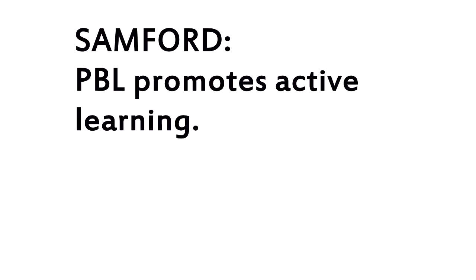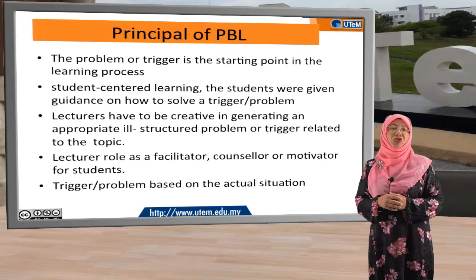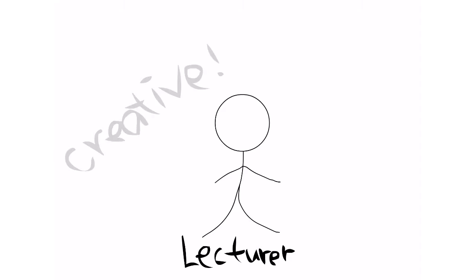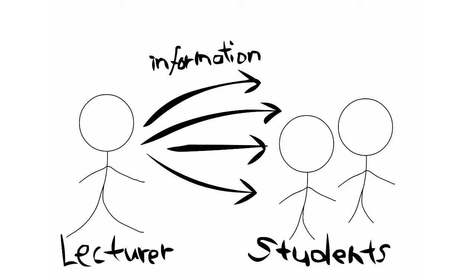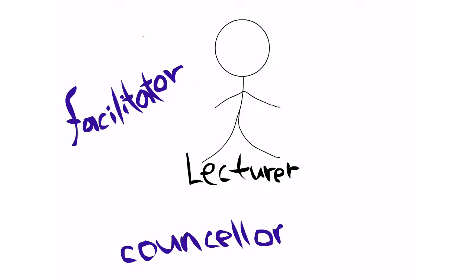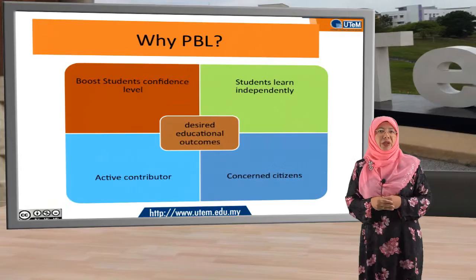The principles of PBL are that learning starts from a problem or trigger, and the problem used is a real problem in a student-centered learning environment. Students are given guidance on how to solve the trigger or problem. Lecturers must be creative in generating an appropriate ill-structured problem related to the topic. The lecturer does not feed students all the information, but acts only as a facilitator, counselor, or motivator. The trigger or problem is based on actual situations according to the students' field.